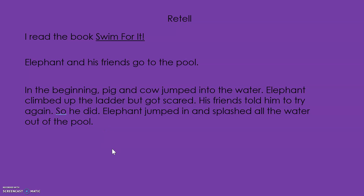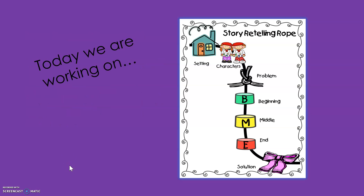What do you think? Is that a good retelling? Do we talk about the characters, the setting, the beginning, middle, and end? Yes, we did — so that is a good retelling. So when you go off today, I want you to find a book that you've read before, and I want you to use this chart and see if you can give a retelling like what we just did. Remember, always start with the title of the book. Okay, go off and give it a try. Off you go!